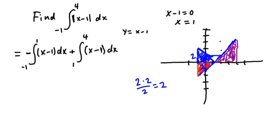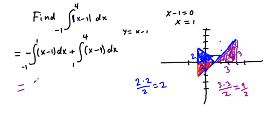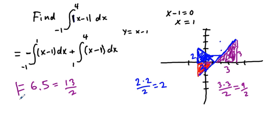The purple triangle is a 3 by 3 triangle, so its area is 3 times 3 over 2, which equals 9 halves, or 4.5. Adding the two areas: 4.5 plus 2 equals 6.5, or 13 halves. That's how we do it graphically, and that's our answer.